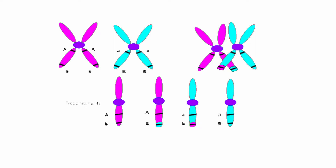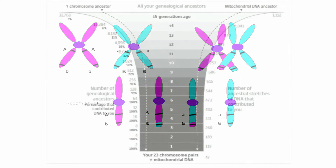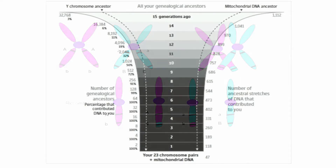So you, as a person, are a combination of multiple ancestors — not only your paternal or maternal lineages, but thousands of your ancestors. And on the flip side of that, eventually going back far enough in history, you will have ancestors from whom you carry no DNA.